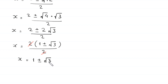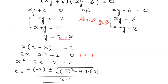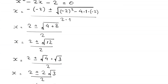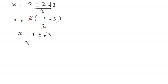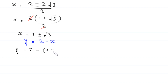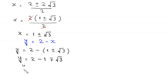To find the corresponding y values, we recall y equals 2 minus x. Substituting x equals 1 plus or minus root 3, we get y equals 2 minus (1 plus or minus root 3), which simplifies to y equals 1 minus or plus root 3.